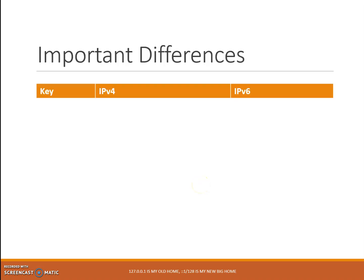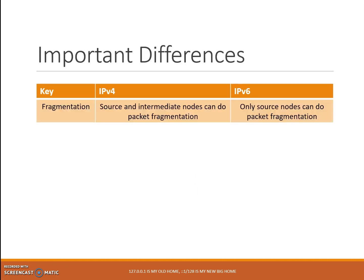There are other differences between the two protocols. Number 1: fragmentation, which means breaking packets into small pieces so the resulting pieces can pass through a link with a smaller maximum transmission unit than the original packet size. In IPv4, the source and intermediate nodes can perform fragmentation. In IPv6, only the source node can perform fragmentation. If an intermediate node such as a router receives an IPv6 packet that needs to be fragmented, it will discard the packet and send an ICMPv6 packet-too-big error message back to the source.